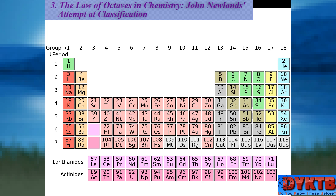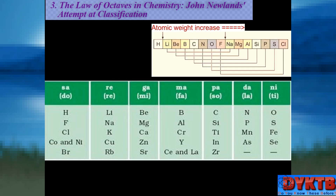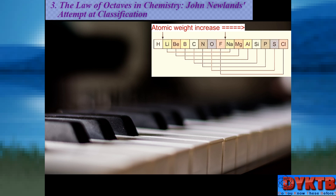Newlands' approach was based on arranging elements in ascending order of their atomic weights. He noticed a recurring pattern where every eighth element seemed to exhibit similar properties. Drawing inspiration from musical octaves, Newlands grouped elements that shared analogous characteristics. The first element served as the starting note, and the eighth element resembled the first, much like musical notes that form harmonious patterns.